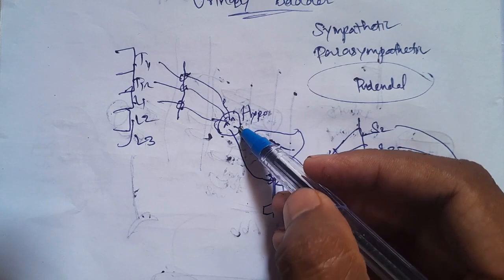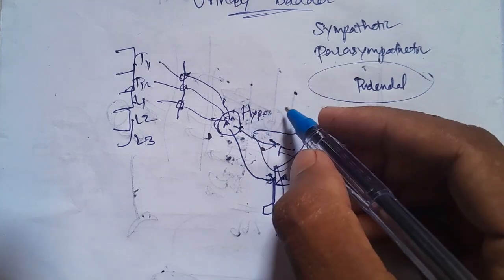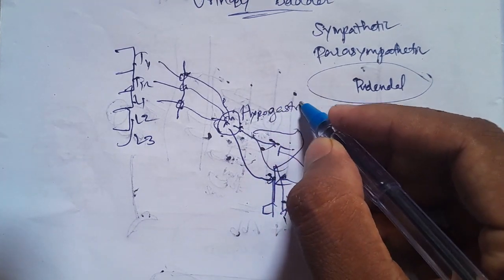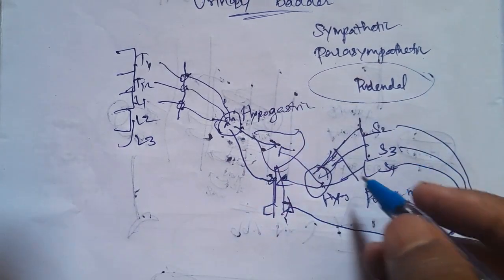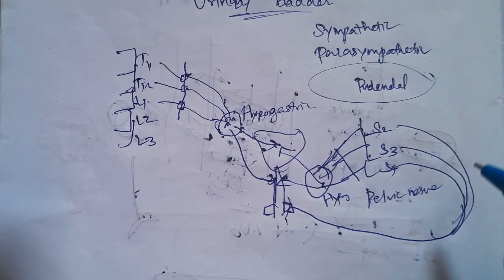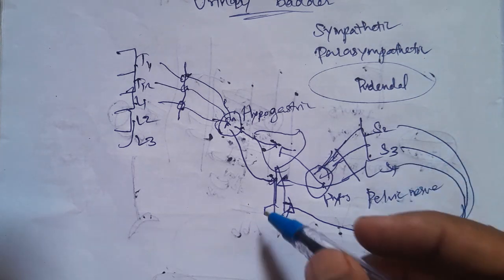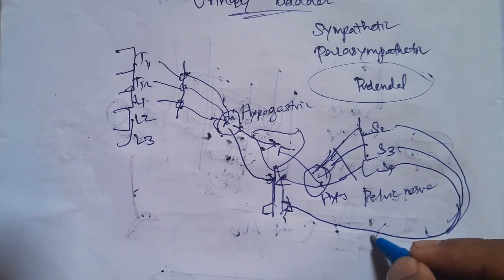The Hypogastric Nerve is the sympathetic nerve. The Hypogastric Nerve carries sympathetic fibers. The Pelvic Nerve carries parasympathetic fibers. The Pudendal Nerve provides somatic voluntary control.